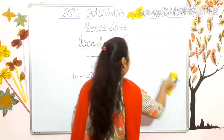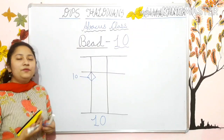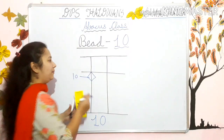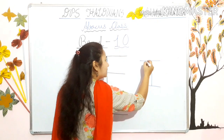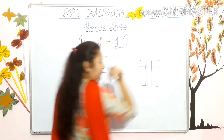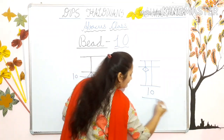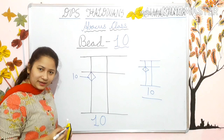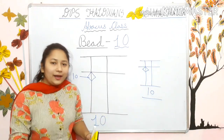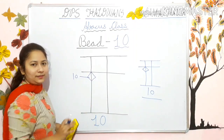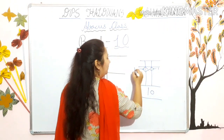Now I hope students you understand how to make bead ten. Again I am repeating: first of all, as you always draw, make eye font — make ice cream shape. Then draw a second line, then one mid line, and draw one bead there. And this is bead ten. So after nine there is bead ten, and ten you have to draw like this. If I make a bead here in the first line, it will be one; but in the second line, it will be ten.